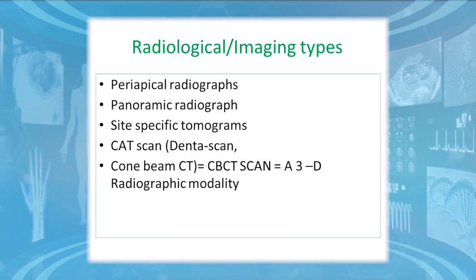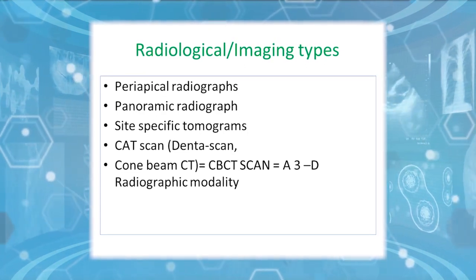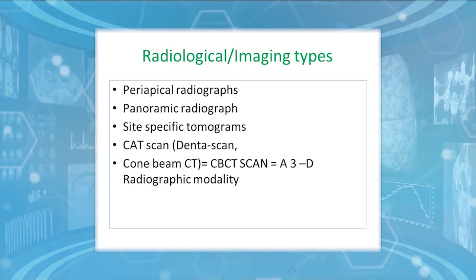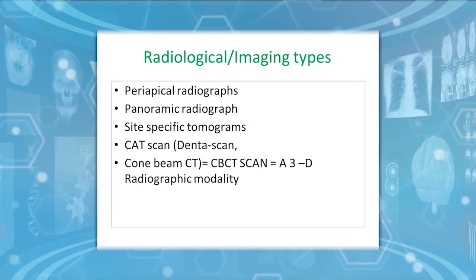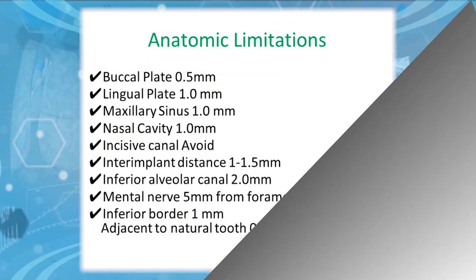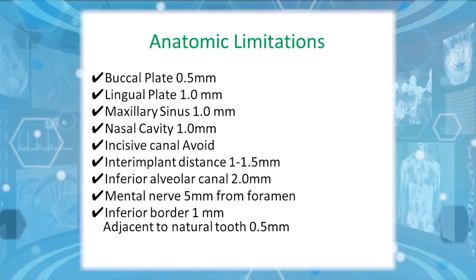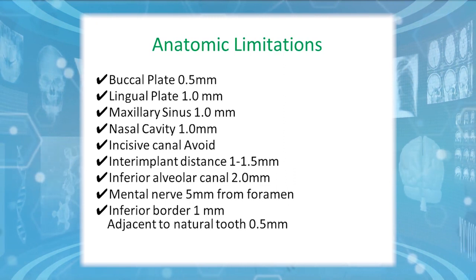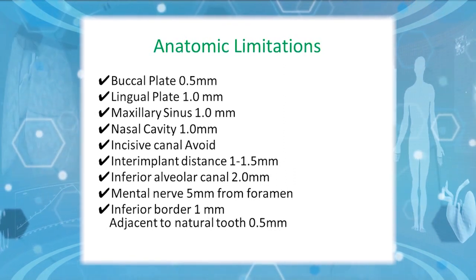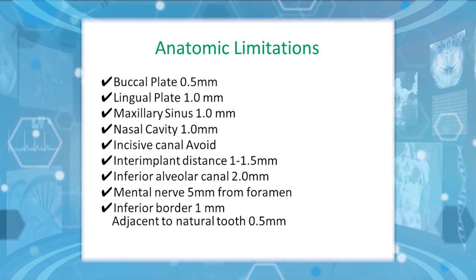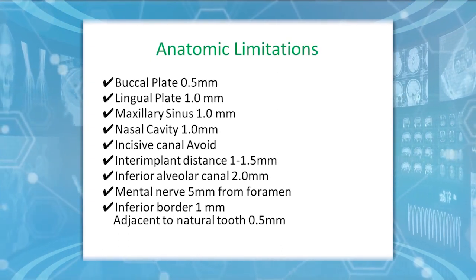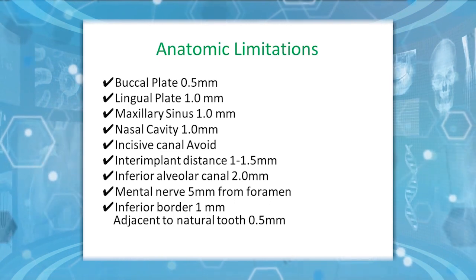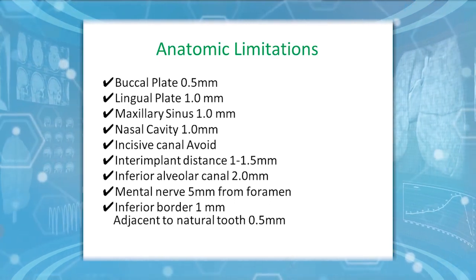Radiographic modalities used include periapical radiographs, site-specific tomographs, CT scan, and cone beam computed tomography (CBCT), which is a 3D radiographic modality. Key anatomical clearances for implant placement are: buccal plate 0.5 mm, lingual plate 1.0 mm, maxillary sinus 1 mm, nasal cavity 1.0 mm, incisive canal 1 mm, inter-implant distance 1–1.5 mm, inferior alveolar canal 2.0 mm, mental nerve 5 mm from the foramen, inferior border 1 mm, and adjacent natural tooth 0.5 mm.